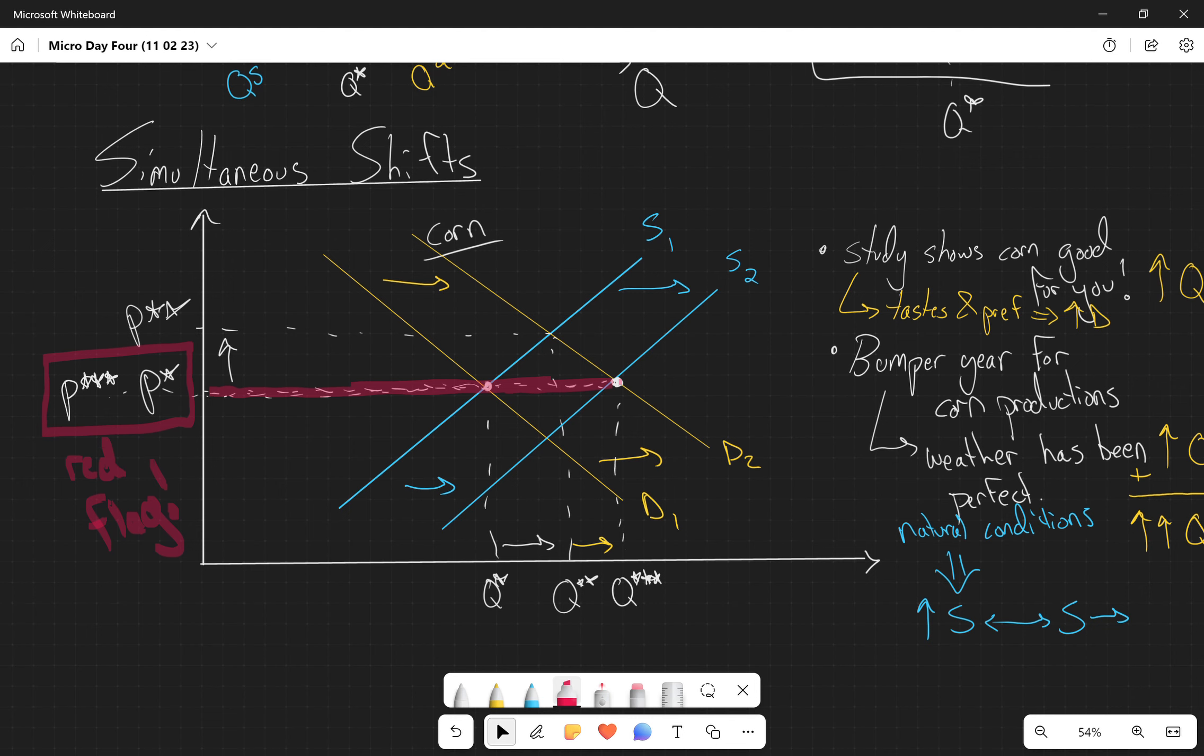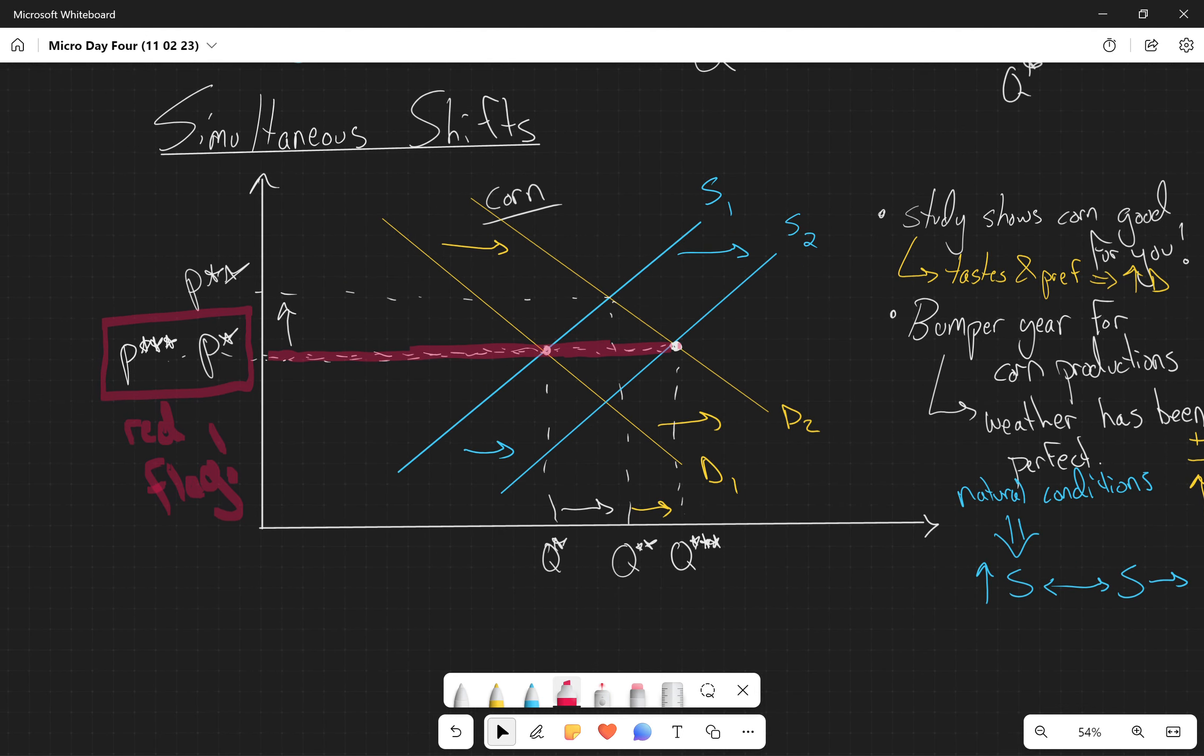So let's real quick just talk about why we don't know. Well, let's say that our supply curve shifted by much more than what I modeled here. Let's say that our supply curve shifted tremendously.